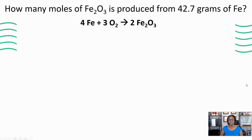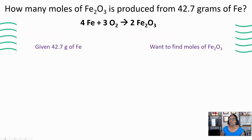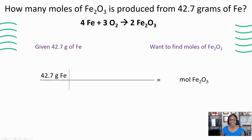Let's look at the second question. How many moles of iron oxide is produced from 42.7 grams of iron? We have our balanced chemical equation. Now we need to determine our given, which is 42.7 grams of iron, and what we're looking for, which is the moles of iron oxide. Next, set up your multiplication grid and put what is given out here on the ledge. We see that we're going from grams of iron to moles of iron oxide. Anytime you're given grams of a substance, you want to convert those grams into moles. To do that, you're going to use molar mass — use your periodic table to determine how many grams of iron for every mole.